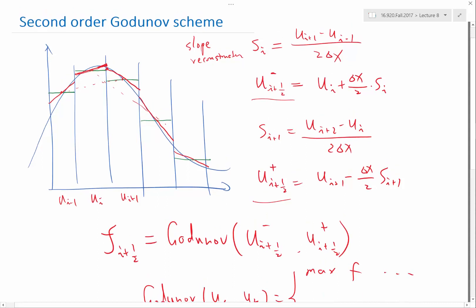The Godunov scheme we have been looking at is actually a special case of this scheme by setting all these s's to 0. If I set s_i and s_{i+1} to 0, then u_{i+½}^- would be exactly u_i and u_{i+½}^+ is exactly u_{i+1}.